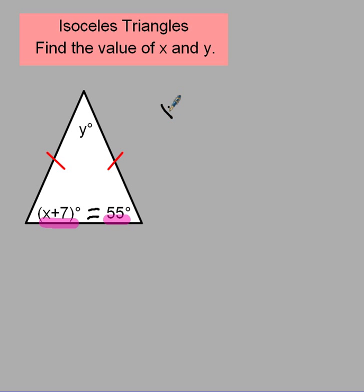So I have x plus 7, that equals 55. Now this is pretty simple, straightforward. You're going to end up with x has a value of 55 minus 7, which is 48. So that's my value for x.